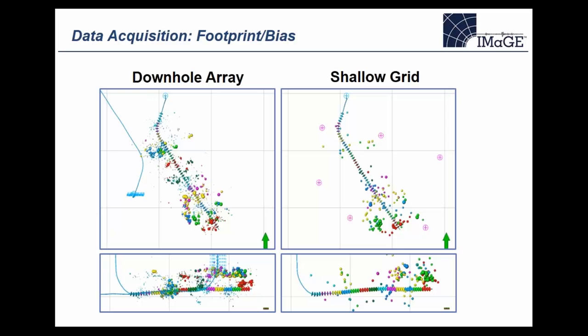Regardless of how we acquire microseismic, the monitoring array will have a large impact on the results. Any monitoring geometry will introduce certain biases in the recorded data — both in terms of sensitivity and accuracy of microseismic events. Think of that as the acquisition footprint. As an example, this slide shows two different monitoring geometries on a project: a downhole vertical array on the left in map view and depth section, and a neighboring horizontal well with a series of geophones deployed.